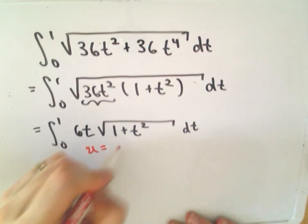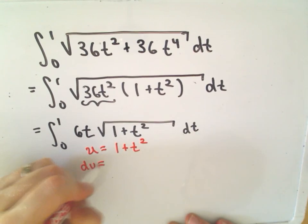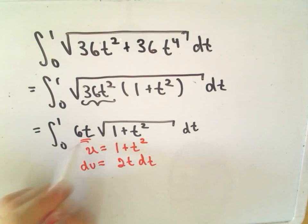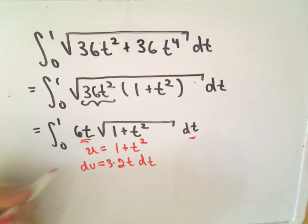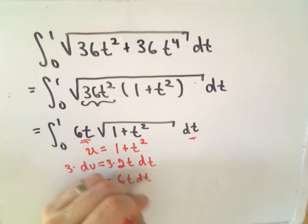We can let u be the stuff underneath the integral, 1 plus t squared. So du would be 2t dt. Notice we have a 6t dt hanging out in our integral. So if I multiply the right side by 3, well we'll get what we need. So it says 3du is going to be equivalent to 6t dt.